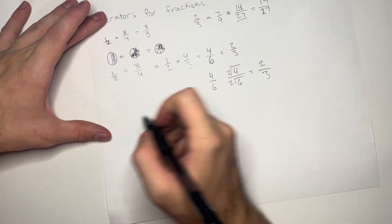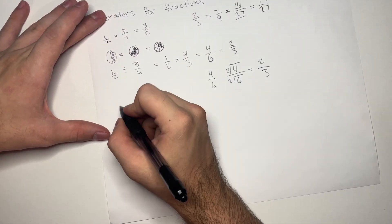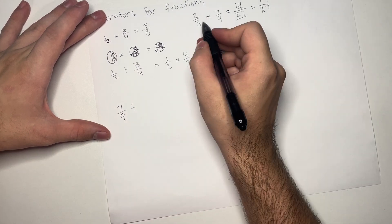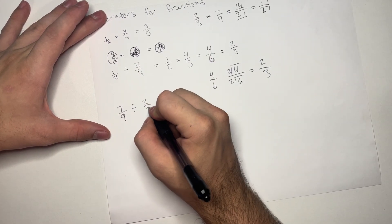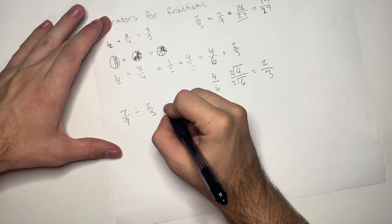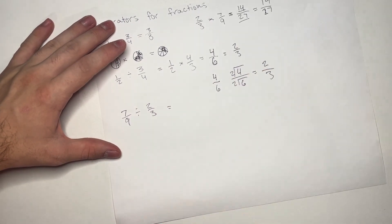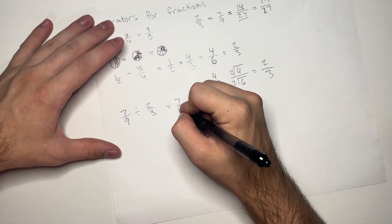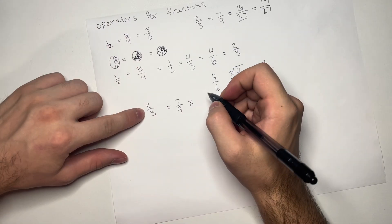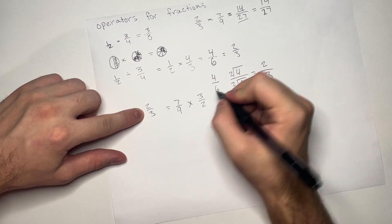Let's go ahead and do this example now. But let's switch them. So, 7 over 9 divided by 2 over 3. Again, keep, change, flip. So, this equation is now going to be changed into 7 ninths times, change, 3 over 2, flip.